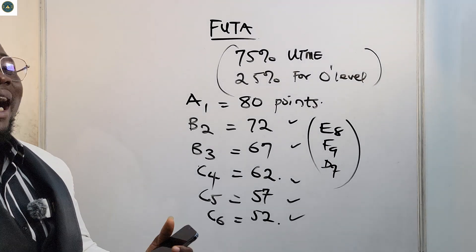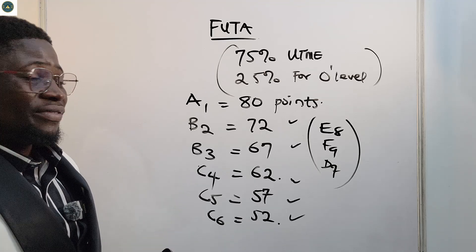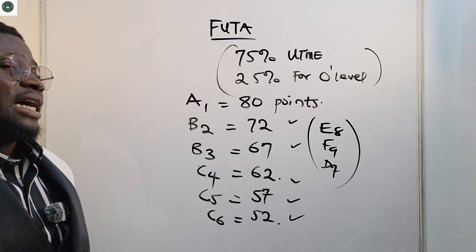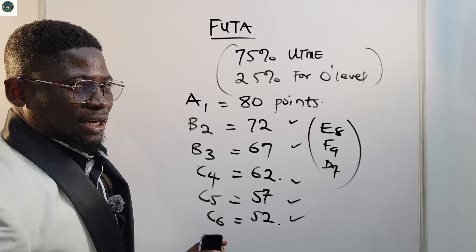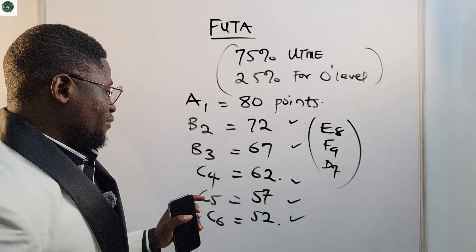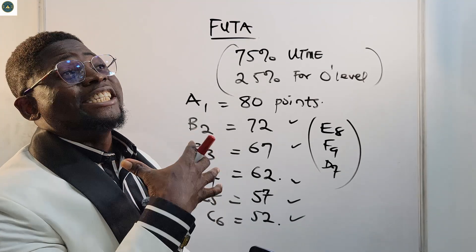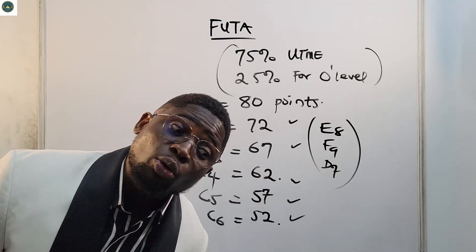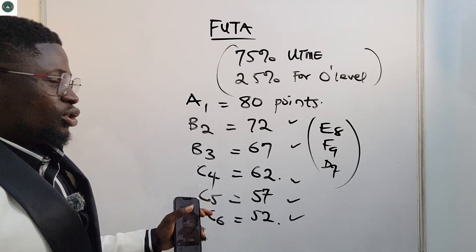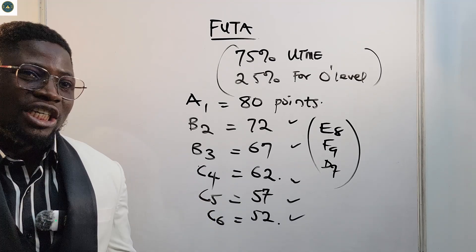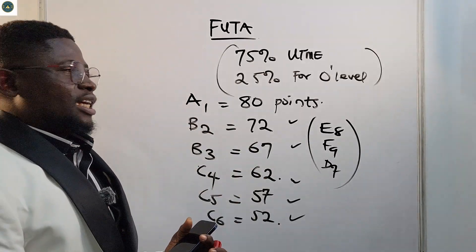If you have E8, F9, or D7, these will not be considered at all — they will not add to your O-level grading. So if you have D7, F9, or E8, those results are not counted. The least result you can have for your O-level for FUTA admission must be a credit — either C4, C5, or C6. To secure your admission, you must ensure you do well in both your O-level and your JAMB result.